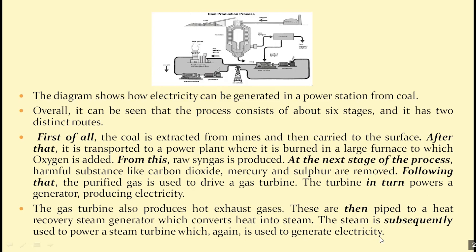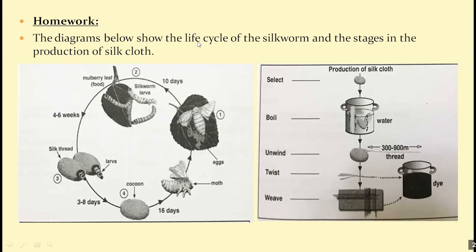This is going to be your homework. The diagram below shows the life cycle of the silkworm and the stages of the production of silk cloth. Write an introduction paraphrasing the question, count the steps in each process for your overall paragraph, then look at each process and decide if it's natural or artificial. According to that, decide if you'll use active or passive voice. Write one paragraph for the first process and another paragraph for the second process as your body paragraphs.